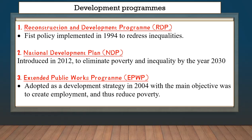You could also argue that the programs did not work because the evidence is also there. You could cite that there are still many people living in poverty, below the poverty line, still high levels of inequality in the country, and still many people unemployed. When asked whether the development programs worked or not, it's up to you to answer — but you must substantiate your answer. There is no right or wrong answer.